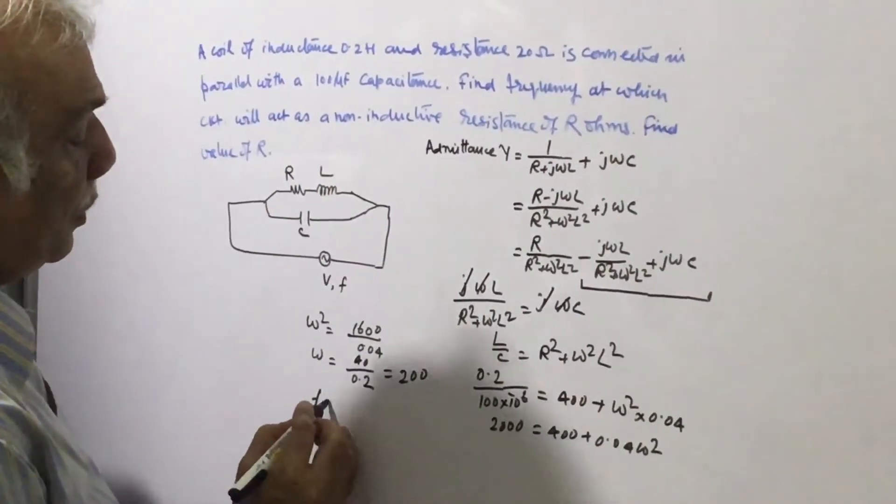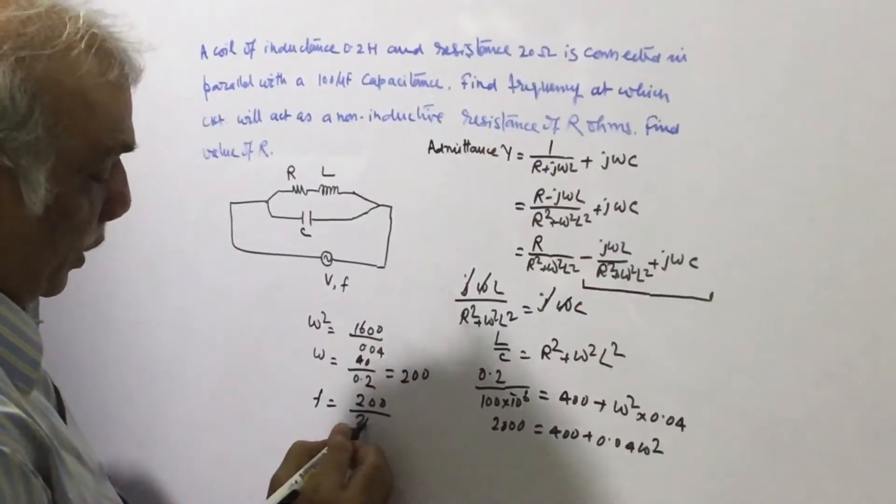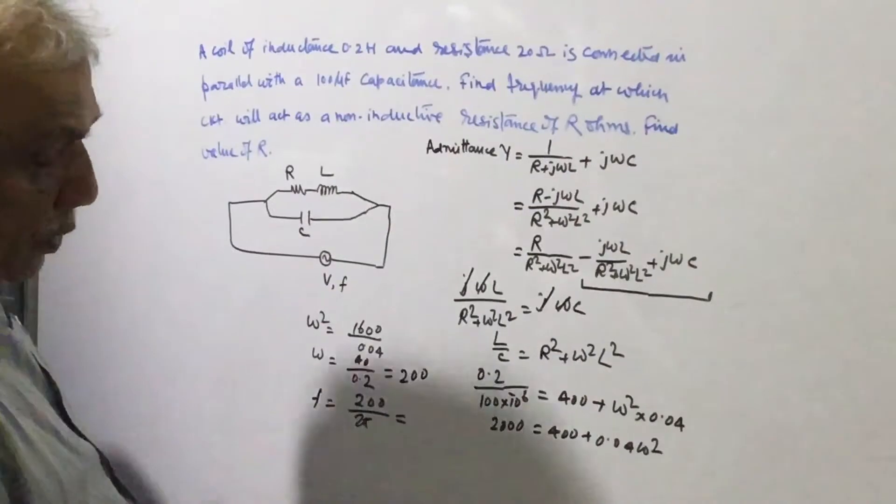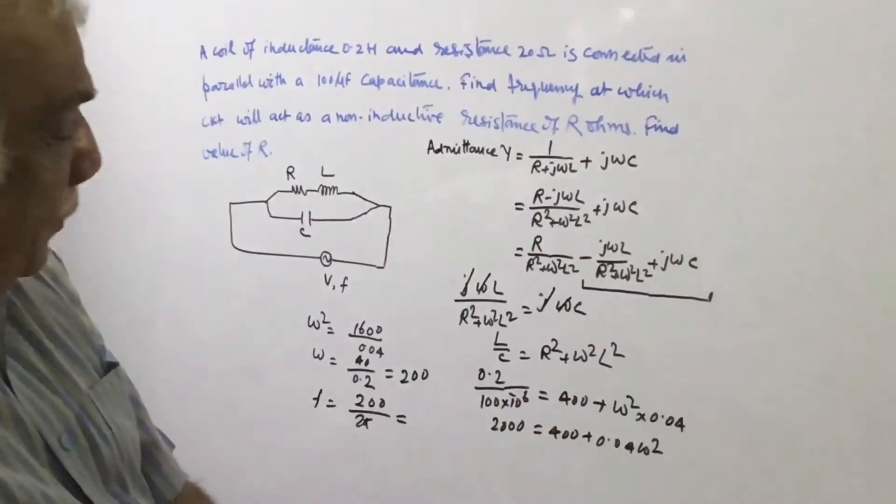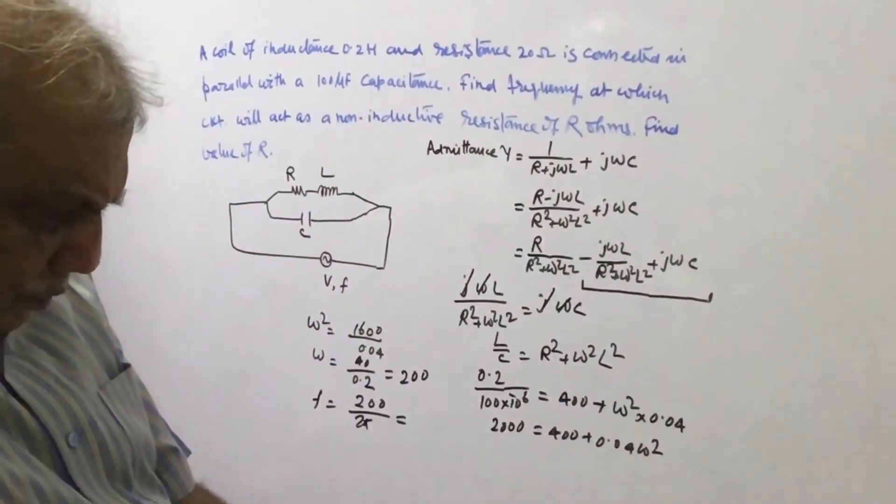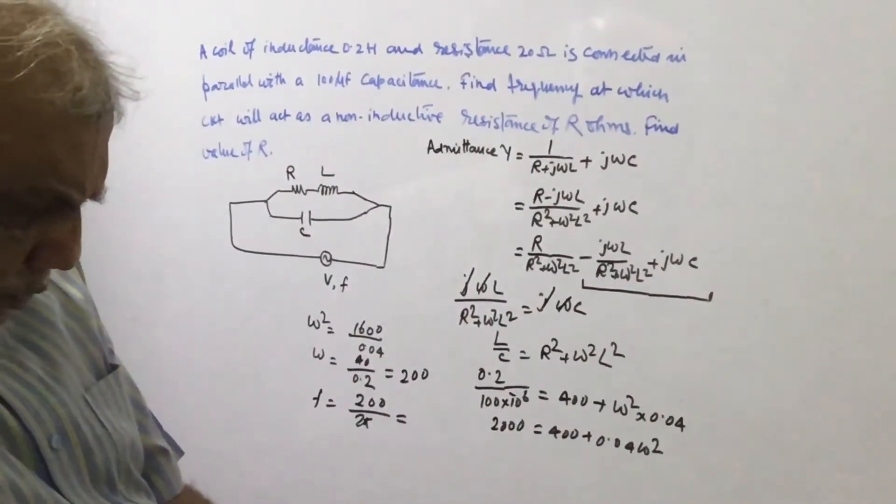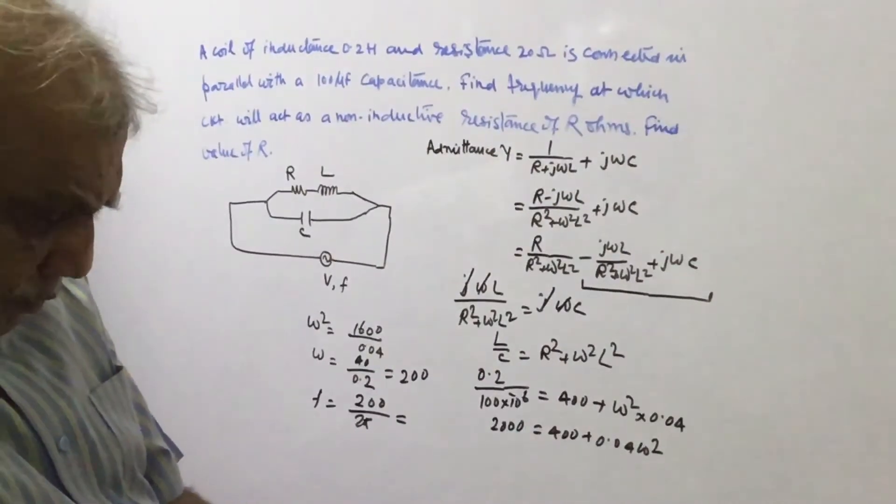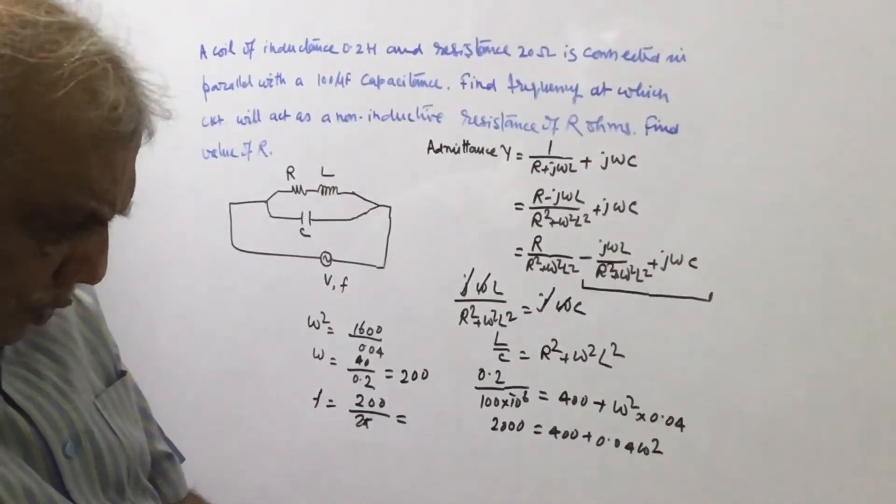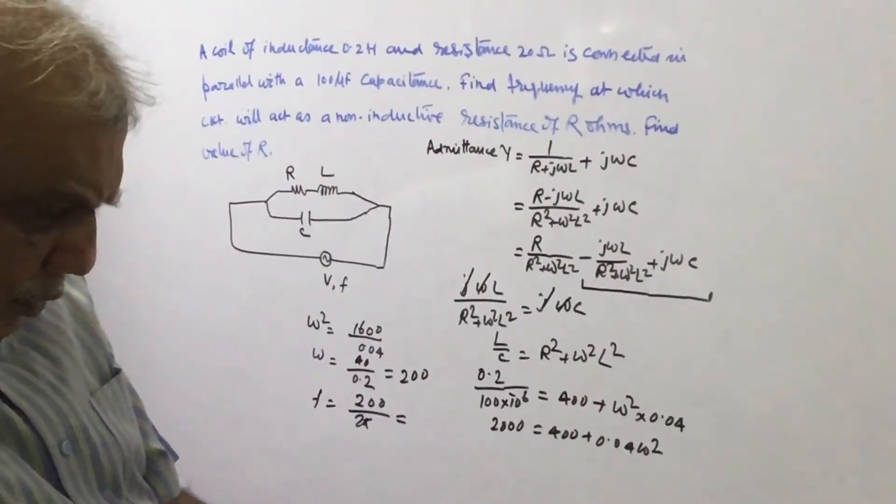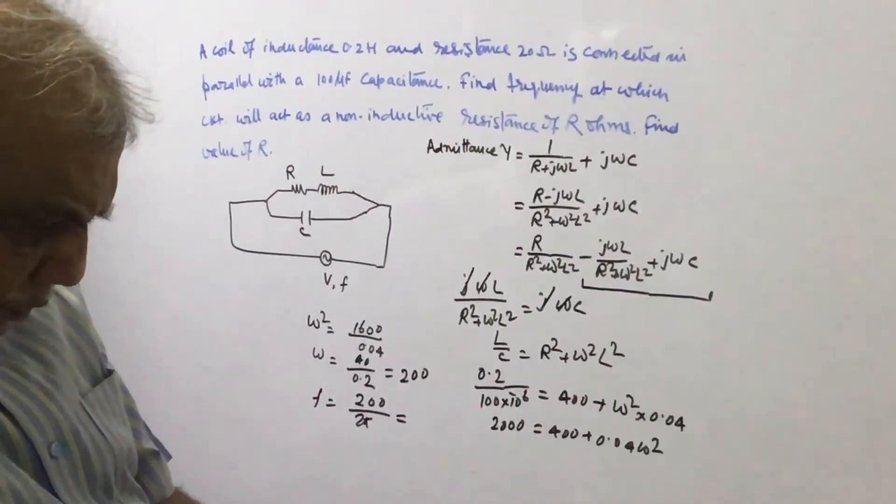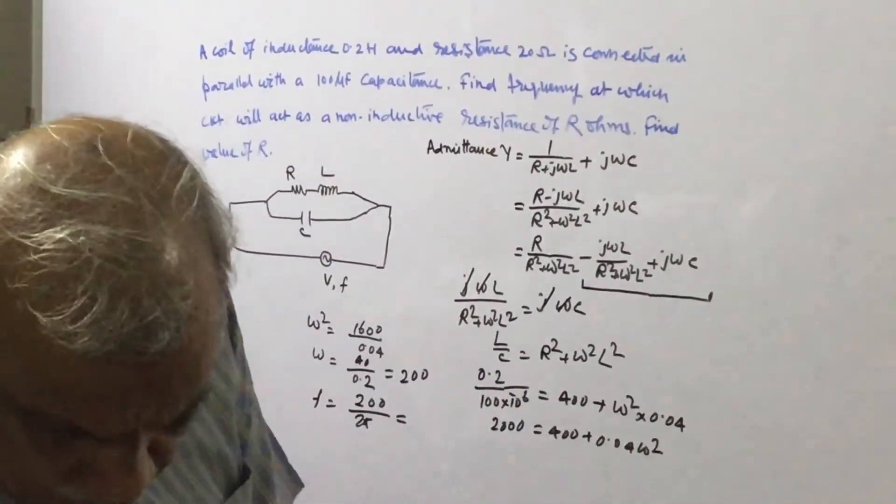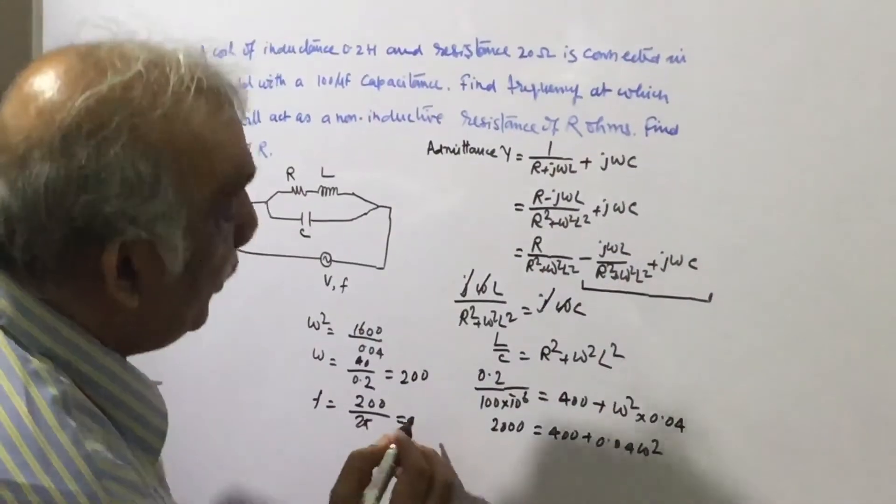So f is 200 divided by 2 pi. So f becomes 31.83 Hertz.